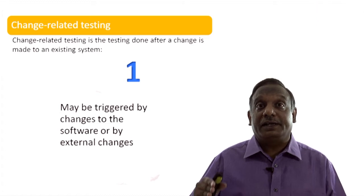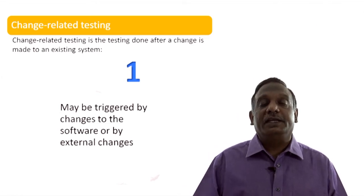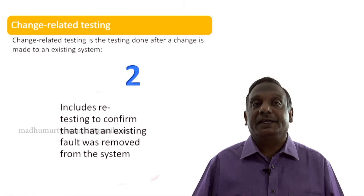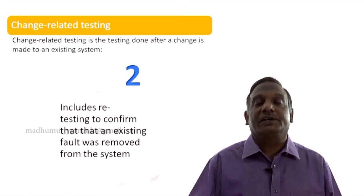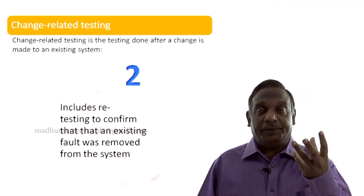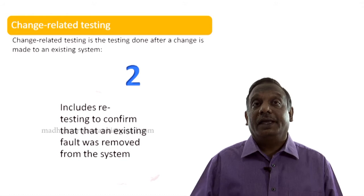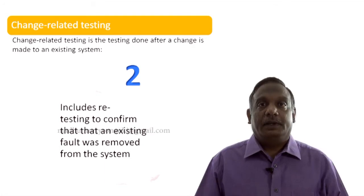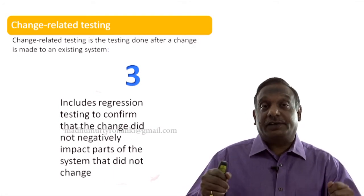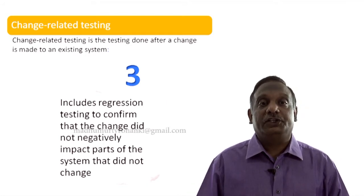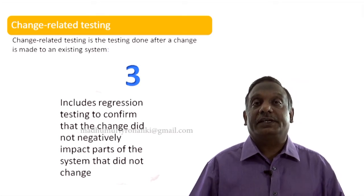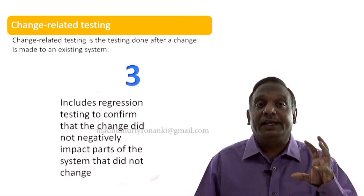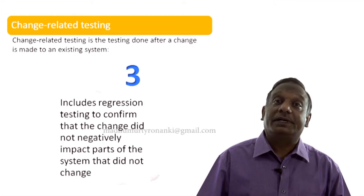The first point is change related testing may be triggered by changes to the software or by external changes. It includes retesting to confirm that an existing fault was removed from the system. It is not sufficient if we do only confirmation testing after we made a change. We also have to do regression testing — to confirm that the change did not negatively impact parts of the system that did not change.